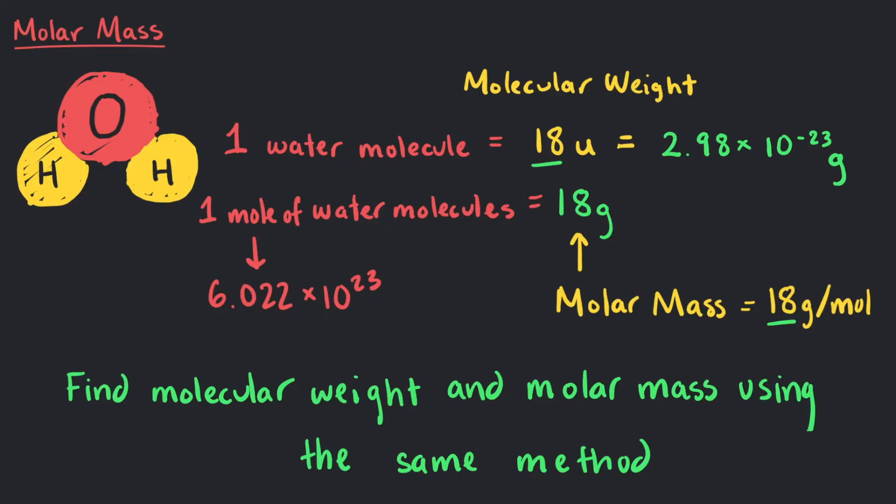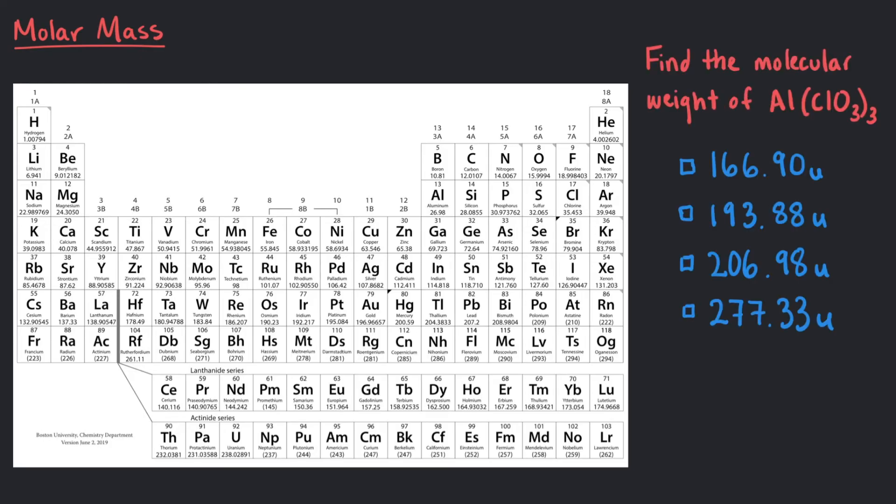Using the atoms on the periodic table, find the molecular weight of aluminum chlorate. Yes, the one aluminum for this formula has an average atomic weight of 26.98U.